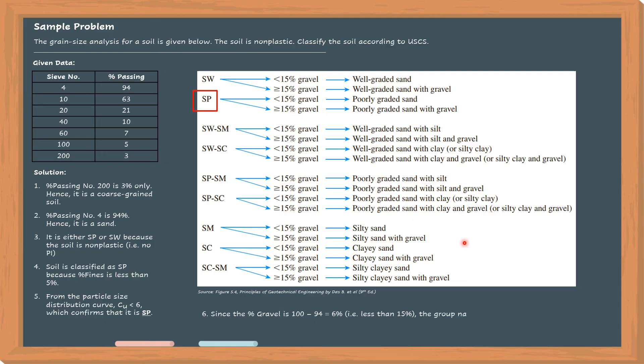The percentage of gravel is equal to 100 minus 94, with 94 being the value of the percent passing number 4. So the percentage of gravel is only equal to 6%, or less than 15%. So our SP group symbol will have a group name of poorly graded sand.